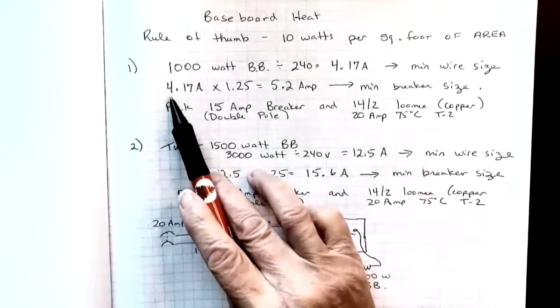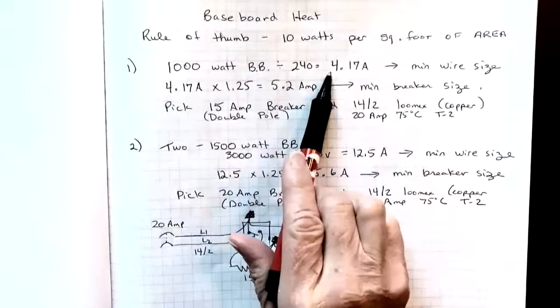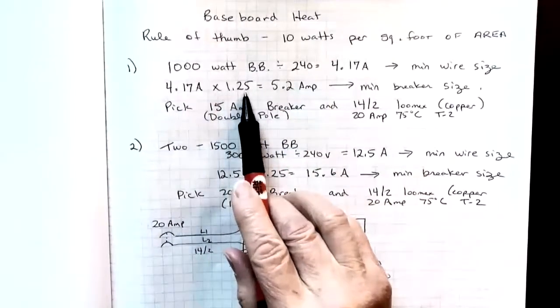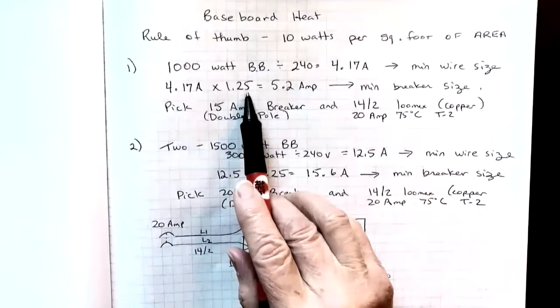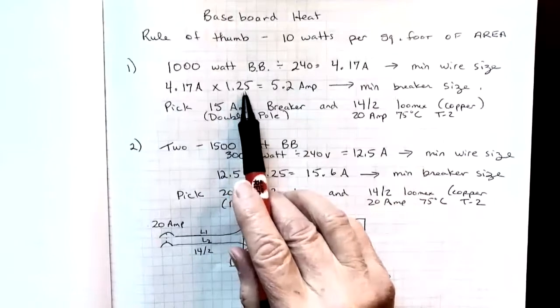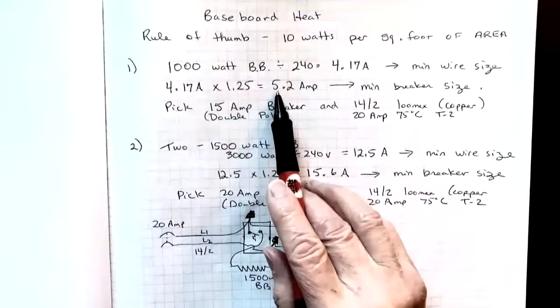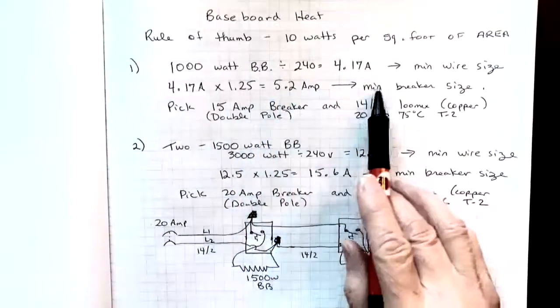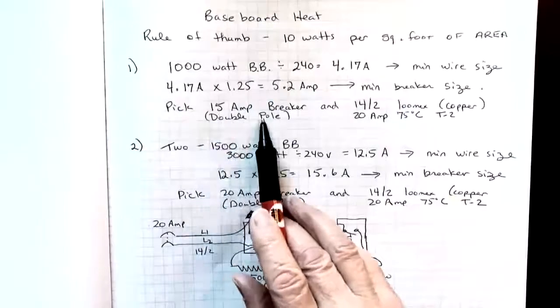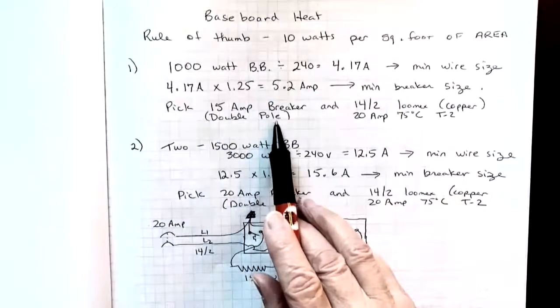To find the breaker size, I take that ampacity 4.17, multiply it by 125 percent because our standard breakers are not rated for continuous duty at 100. So we have to upsize them so they can handle the load. And we get 5.2. Our minimum breaker size, typically a 15 amp double pull breakers minimum size for homes in Canada.